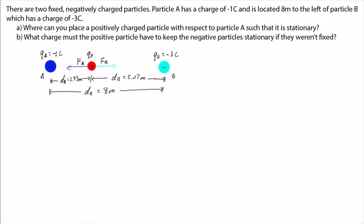Let's pretend that there is a pin keeping particle B in place, so we can look at the forces acting on A first. There is a force pulling particle A towards the positive particle, and there is a force pushing particle A away from particle B.